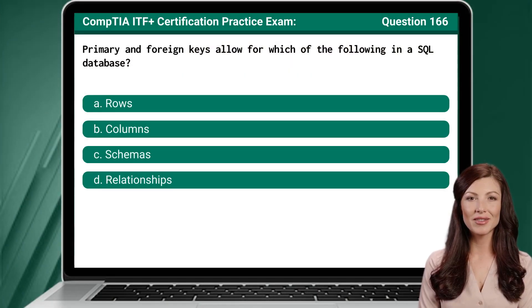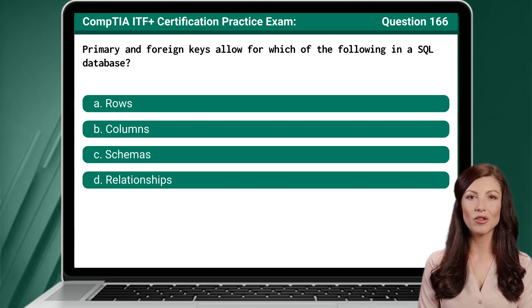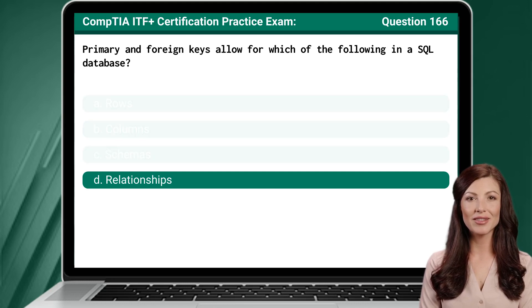Question 166: Primary and foreign keys allow for which of the following in a SQL database? The answer is D: Relationships.